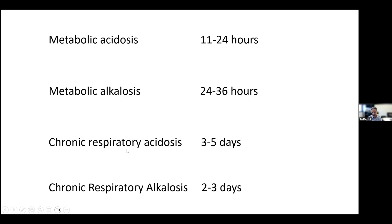Chronic respiratory acidosis — if you cut ventilation in half on a ventilator, it takes three to five days for the bicarbonate to increase to the new steady state. Chronic respiratory alkalosis takes a shorter period of time, but it still takes time for the bicarbonate to fall to the predicted level of 2-to-1, or half of what the PCO2 fell. Remember these time frames for the rest of your fellowship. Only once you've waited the appropriate time can you diagnose a more complex situation with more than one acid-base disorder.